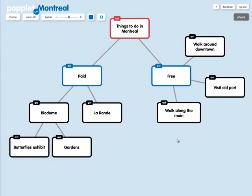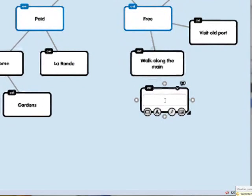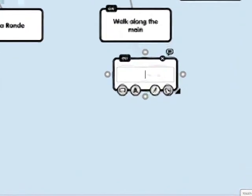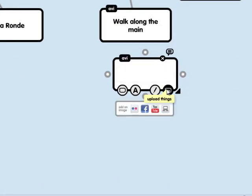Let's say walking along the main, one of my favorite places to eat is Schwartz's Smoked Meat. So instead of actually typing that out, let's have an image. I'm going to double-click, click on this button down here, and choose this over here, which is from Flickr.